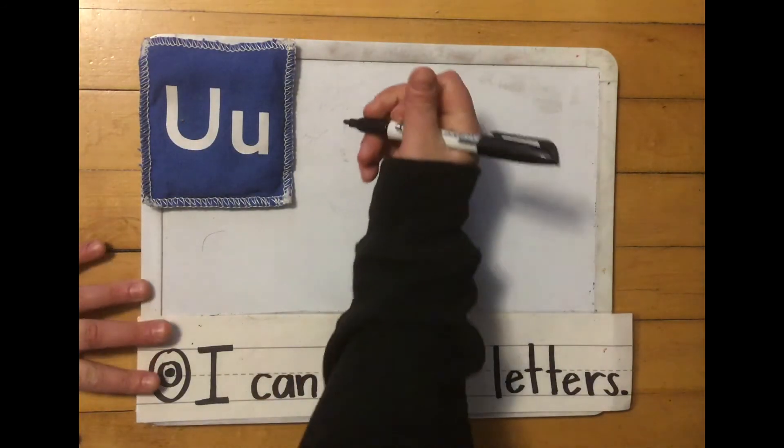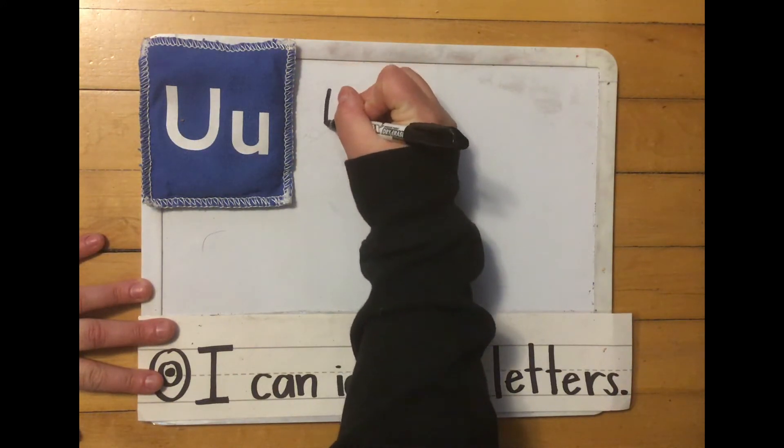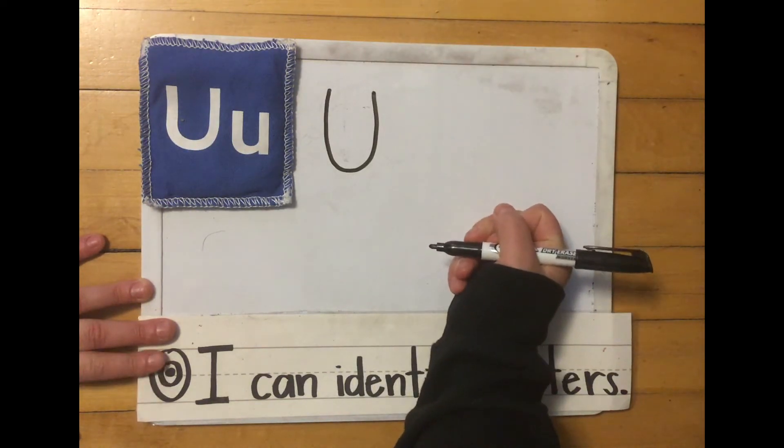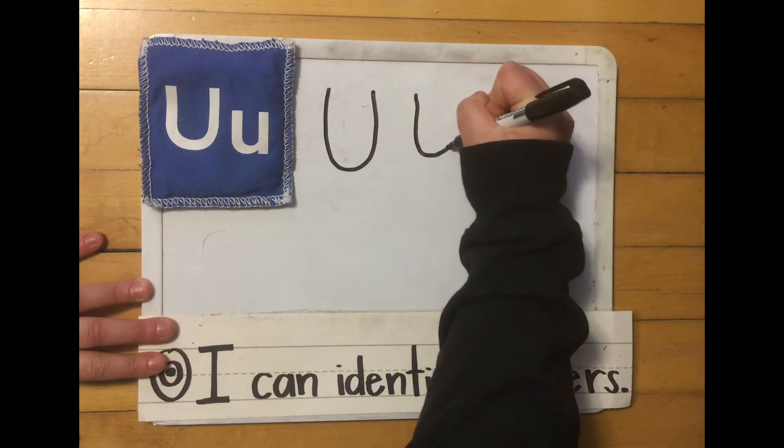Got our whiteboard markers. Uppercase U, we're going to start at the top, curve down, and curve up. Let's do that again. Start at the top, curve down, curve up.